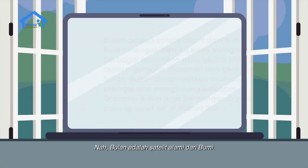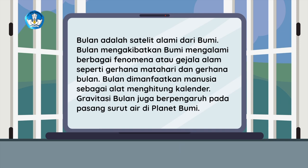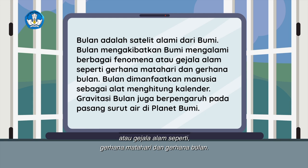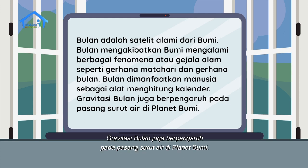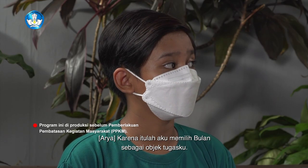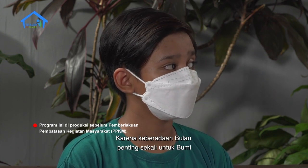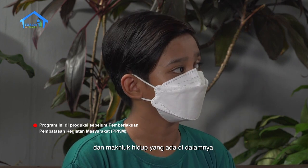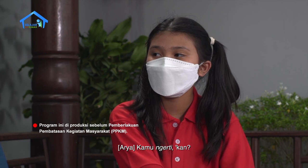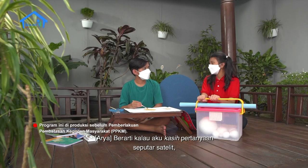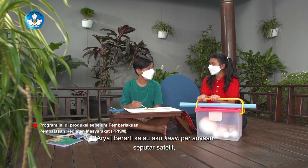Nah, bulan adalah satelit alami dari bumi. Bulan mengakibatkan bumi mengalami berbagai fenomena atau gejala alam seperti gerhana matahari dan gerhana bulan. Bulan dimanfaatkan manusia sebagai alat menghitung kalender. Gravitasi bulan juga berpengaruh pada pasang surut air di planet bumi. Karena itulah aku memilih bulan sebagai objek tugasku, karena keberadaan bulan penting sekali untuk bumi dan makhluk hidup di dalamnya. Kamu ngerti kan? Tentu dong! Berarti kalau aku kasih pertanyaan seputar satelit, kamu bisa jawab dong? Pasti dong!